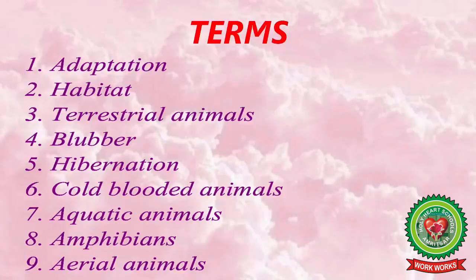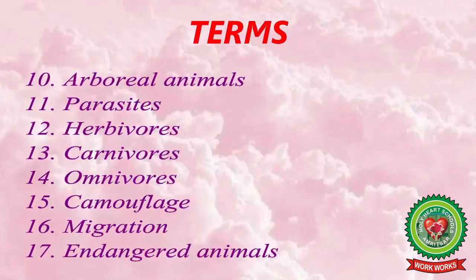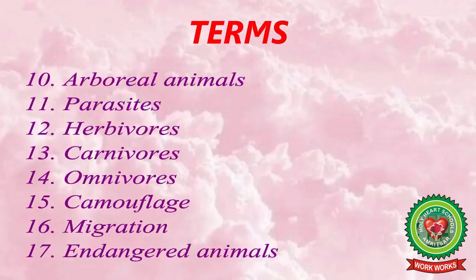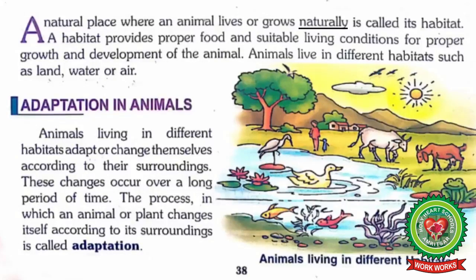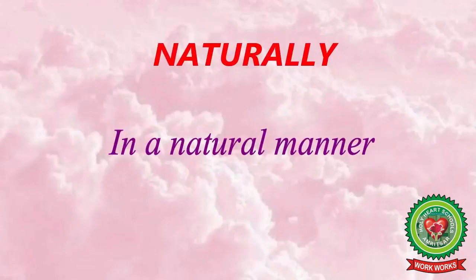The key terms in this chapter are: adaptation, habitat, terrestrial animals, blubber, hibernation, cold-blooded animals, aquatic animals, amphibians, aerial animals, arboreal animals, parasite, herbivores, carnivores, omnivores, camouflage, migration, and endangered animals. Open your book at page number 38. A natural place where an animal lives or grows naturally is called its habitat. Underline the word 'naturally' and write down its meaning: in a natural manner.